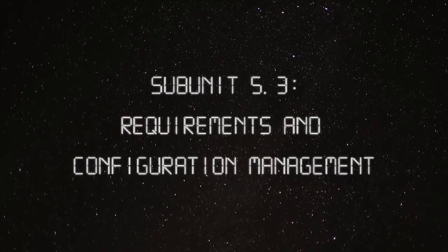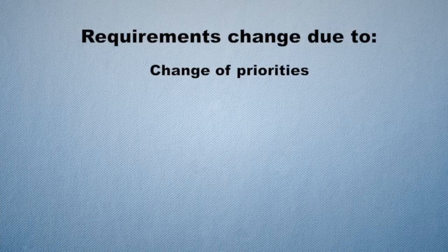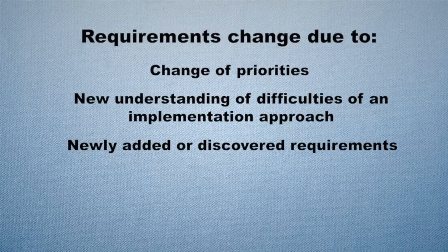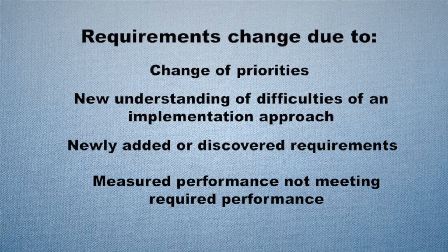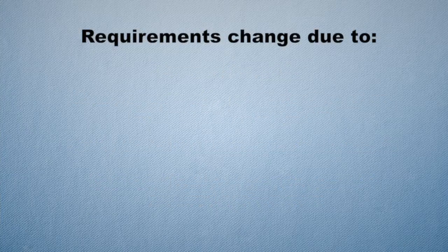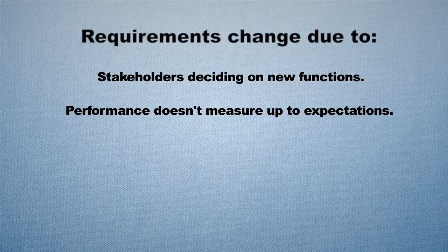Subunit 5.3, Requirements and Configuration Management. During the life cycle of a project or system from initiation to operations, requirements can change due to a number of different circumstances, including a change of priorities — maybe stakeholders have changed high-level priorities — a new understanding of difficulties of an implementation approach, newly added or discovered requirements from an insufficient early process, and measured performance not meeting required performance.